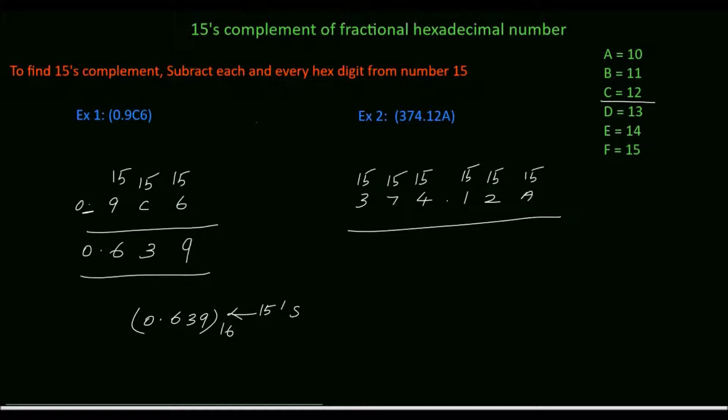15 minus A. A is equivalent of 10. So 15 minus 10, which is 5. 15 minus 2, which is 13. 13 is equivalent of D.